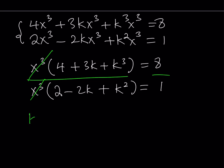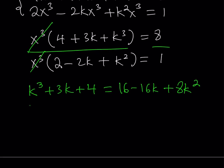From the top I'm going to get k³ plus 3k plus 4. And the bottom is going to be 16 minus 16k plus 8k². Let's go ahead and simplify this equation.